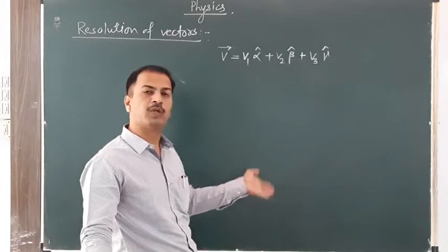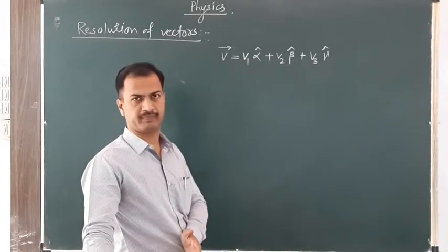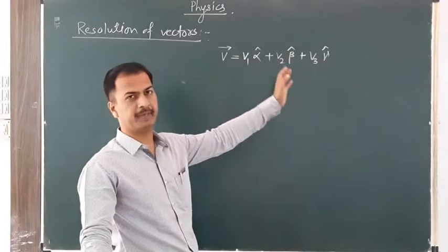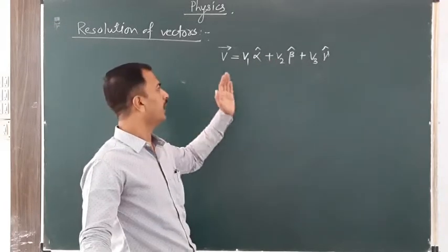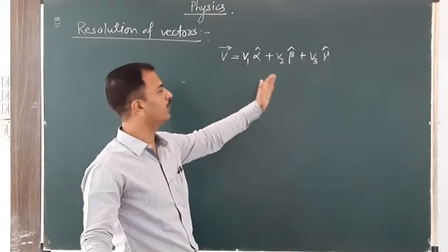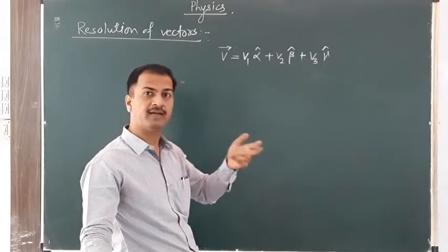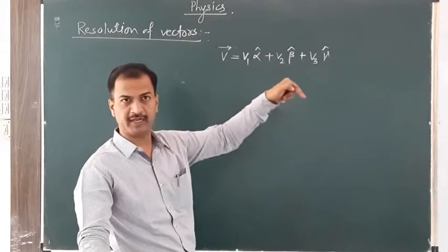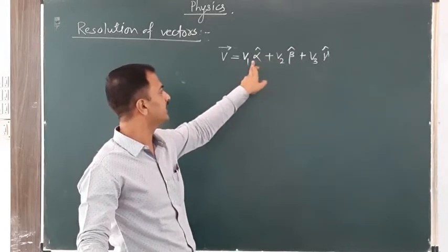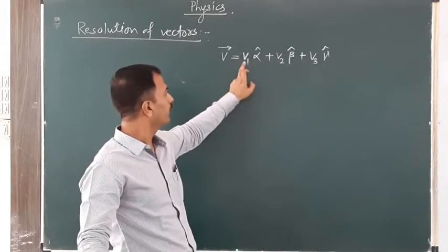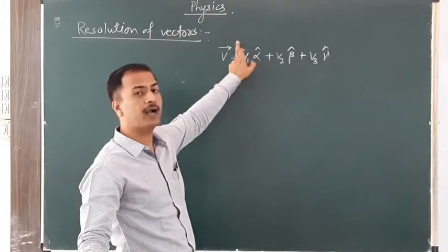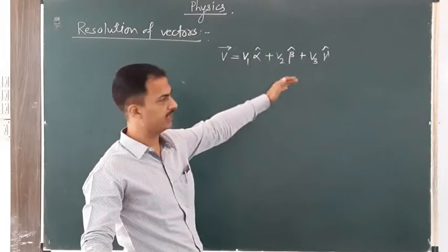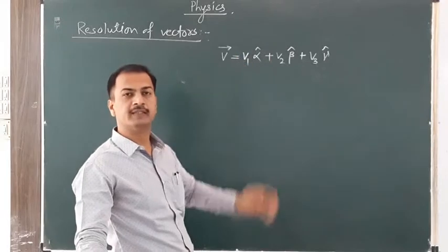You choose a coordinate system. If you depend on alpha, beta, and components v1, v3, then the distance is the middle. Alpha is the unit vector in a particular direction. The distance is the middle of the v1 component, because v2 is the middle of v3.